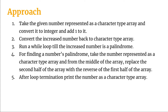Whenever we find that the number in the current iteration is a palindrome, we'll go out of the loop. For finding a number's palindrome, we'll take the number represented as a character type array and from the middle of the array we'll replace the second half of the array with the reverse of the first half. We'll check whether all the elements of the first half are in reverse order in the second half.